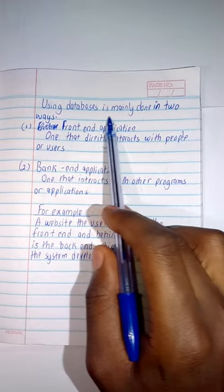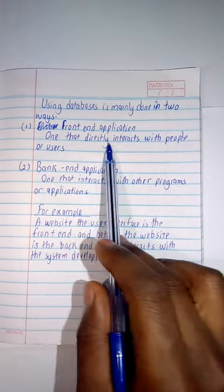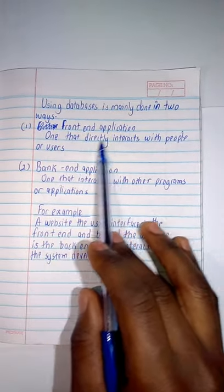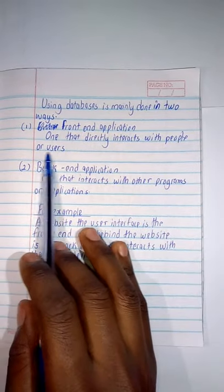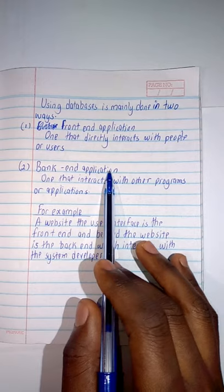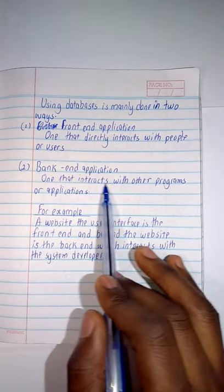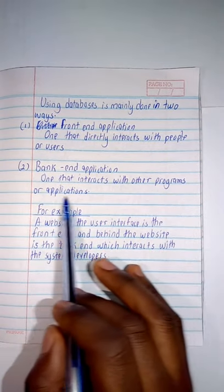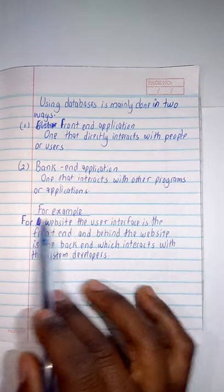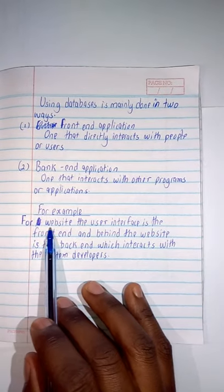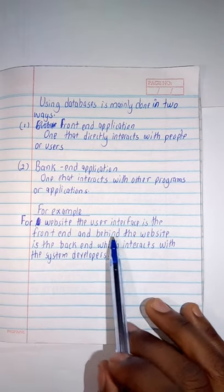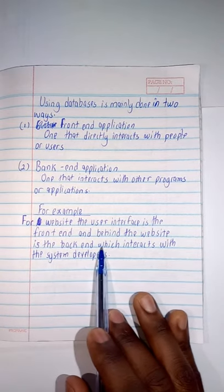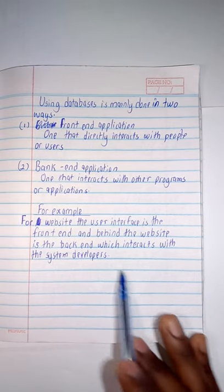Using databases is mainly done in two ways. We have the front end, which directly interacts with people or users. Then we have the back-end application, which interacts with other programs or applications. For example, for a website, the user interface is the front end, and behind the website is the back-end which interacts with the system developers.